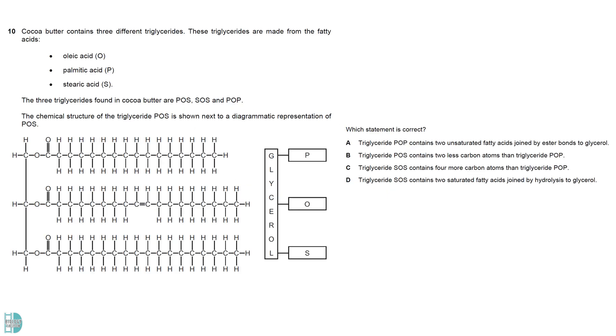According to the diagram, O is unsaturated due to the presence of a carbon-carbon double bond. P and S are both saturated. A is wrong because POP would have one unsaturated fatty acid tail, not two. B is incorrect because P has two carbons less than the others, so POS should have more carbons than POP. C is the correct answer. D is wrong because fatty acids join to glycerol by condensation, not hydrolysis.